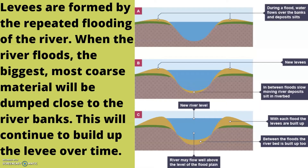Levees are formed by the repeated flooding of the river. When the river floods, the biggest, most coarse material will be dumped close to the river banks. This will continue to build up the levee over time.